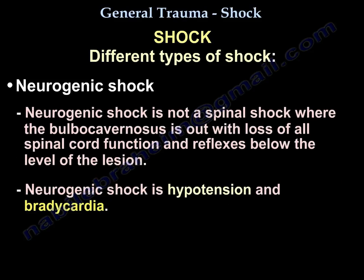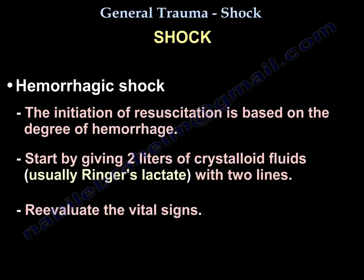Neurogenic shock is not the same as spinal shock, where the bulbocavernosus reflex is absent and there is loss of all spinal cord function and reflexes below the level of the lesion. Neurogenic shock is hypotension and bradycardia. The initiation of resuscitation is based on the degree of hemorrhage — start with crystalloid, usually Ringer's lactate, two liters with two IV lines, then re-evaluate vital signs.